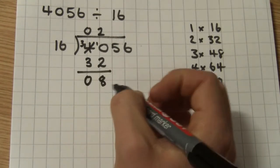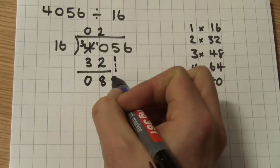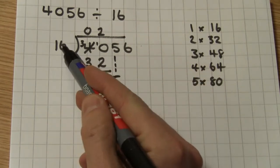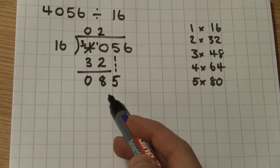Now, ready to move on. 16 into 8 doesn't go, so I'm going to bring down my 5. Now I've got to work out how many times 16 goes into 85.